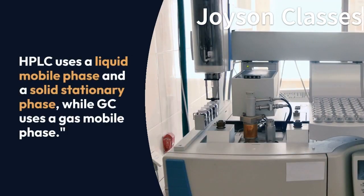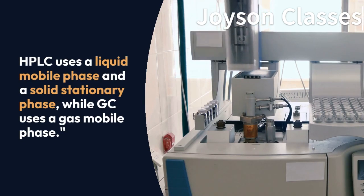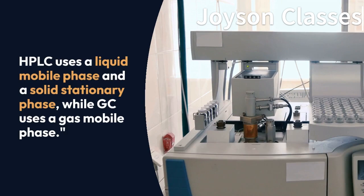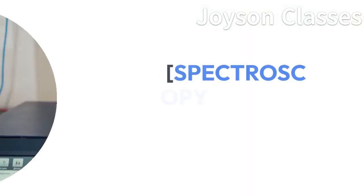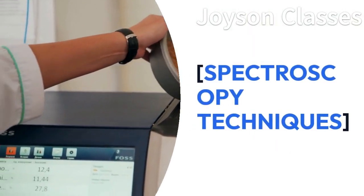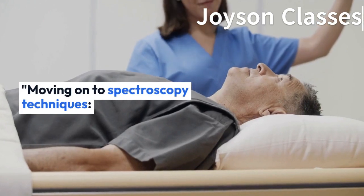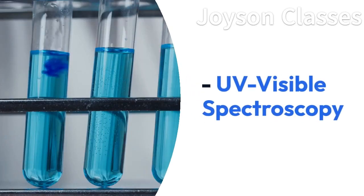HPLC uses a liquid mobile phase and a solid stationary phase, while GC uses a gas mobile phase. Spectroscopy Techniques. Moving on to Spectroscopy Techniques: UV Visible Spectroscopy.